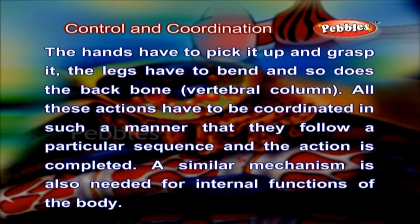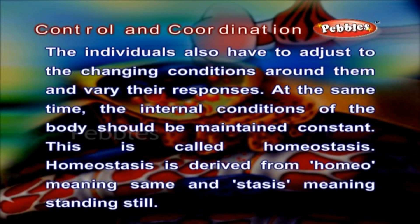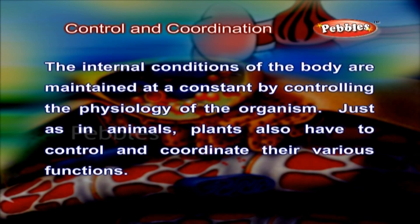A similar mechanism is also needed for internal functions of the body. Individuals also have to adjust to the changing conditions around them and vary their responses. At the same time, the internal conditions of the body should be maintained constant. This is called homeostasis. Homeostasis is derived from homeo meaning same and stasis meaning standstill. The internal conditions of the body are maintained at a constant by controlling the physiology of the organism. Just as in animals, plants also have to control and coordinate their various functions.